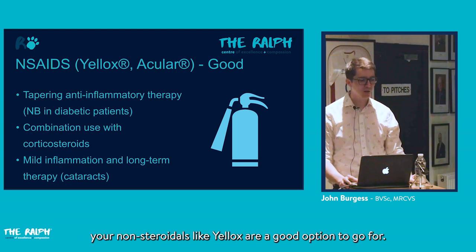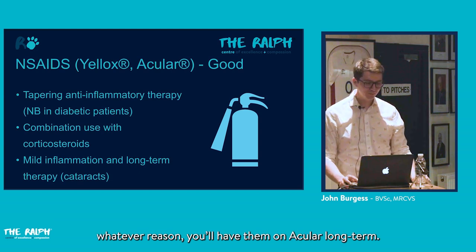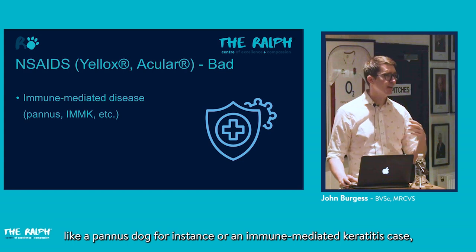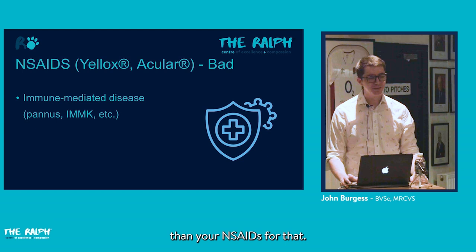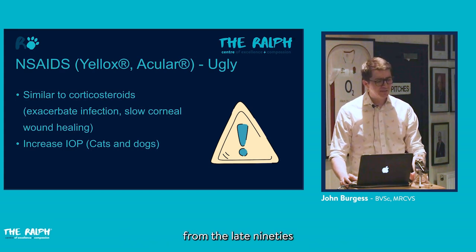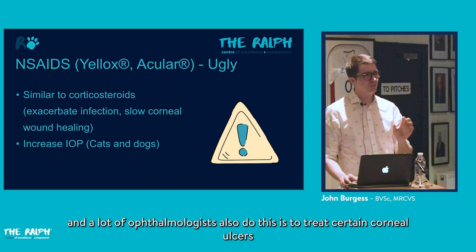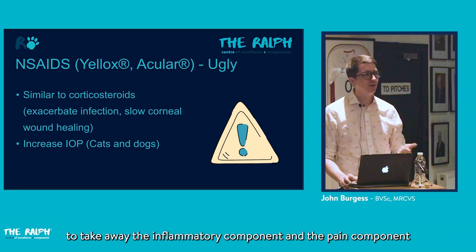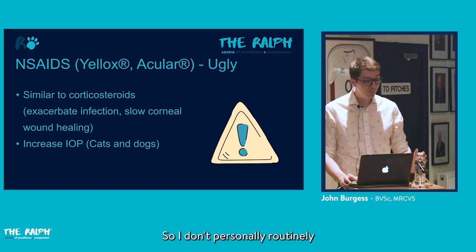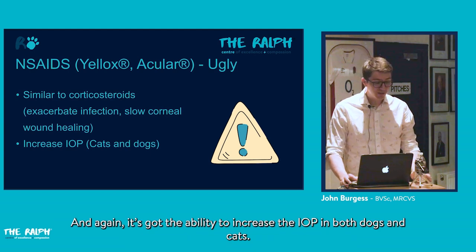For patients such as diabetic dogs we try to get off steroids quickly, and NSAIDs like Yellox are a good option. They're less effective than steroids for immune-mediated diseases like pannus or immune-mediated keratitis. NSAIDs can delay wound healing and potentially exacerbate melting ulcers, and they can increase intraocular pressure in both dogs and cats. Some ophthalmologists use Acular with certain corneal ulcers for its pain-relieving and anti-inflammatory component.